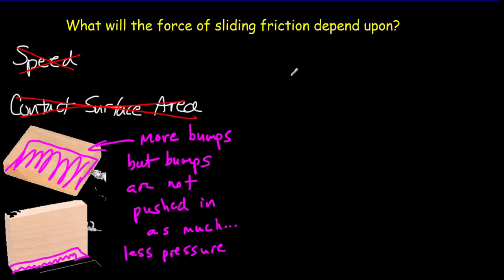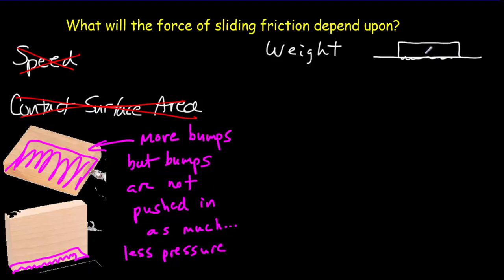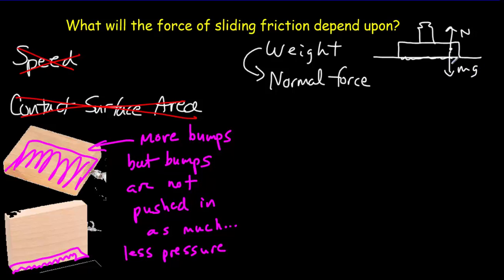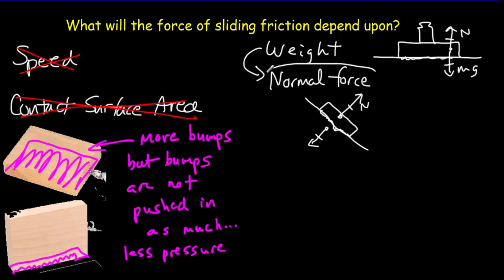Your next guess would probably be the weight, and that's certainly true. If you put a weight on top of a block, the bumps get pushed down more deeply and you end up with larger friction. However, a better concept than weight is the normal force. On a flat surface, normal force and weight are equal. But on an incline, it's really the normal force that's equal and opposite to the force pushing against the surface. The bigger your normal force, the more the surfaces push against each other — so normal force is a very important factor affecting friction.